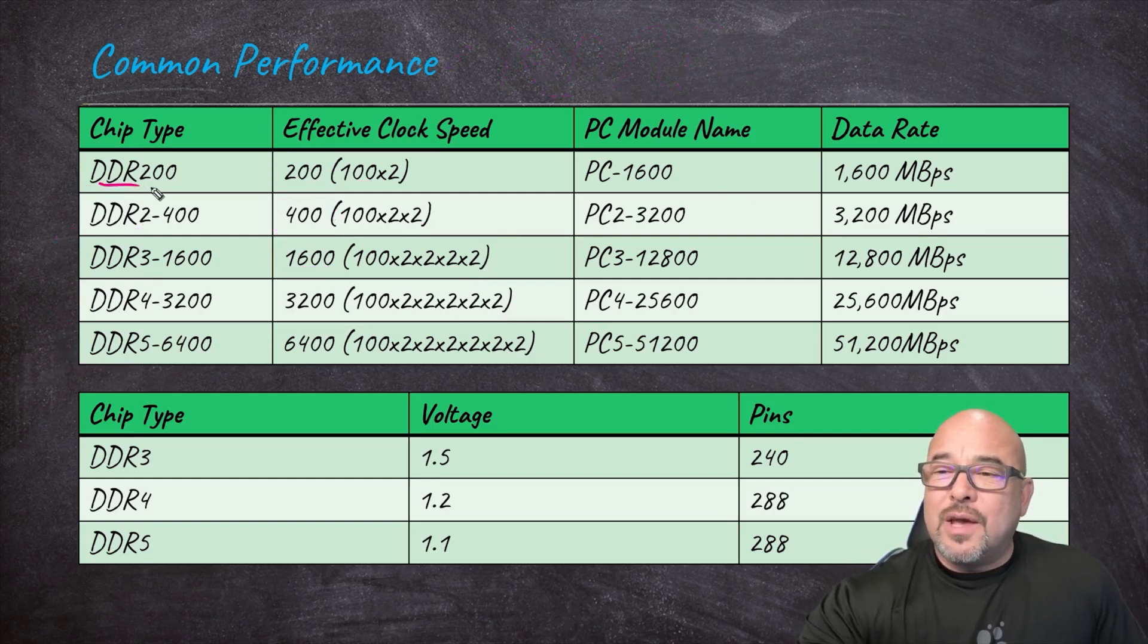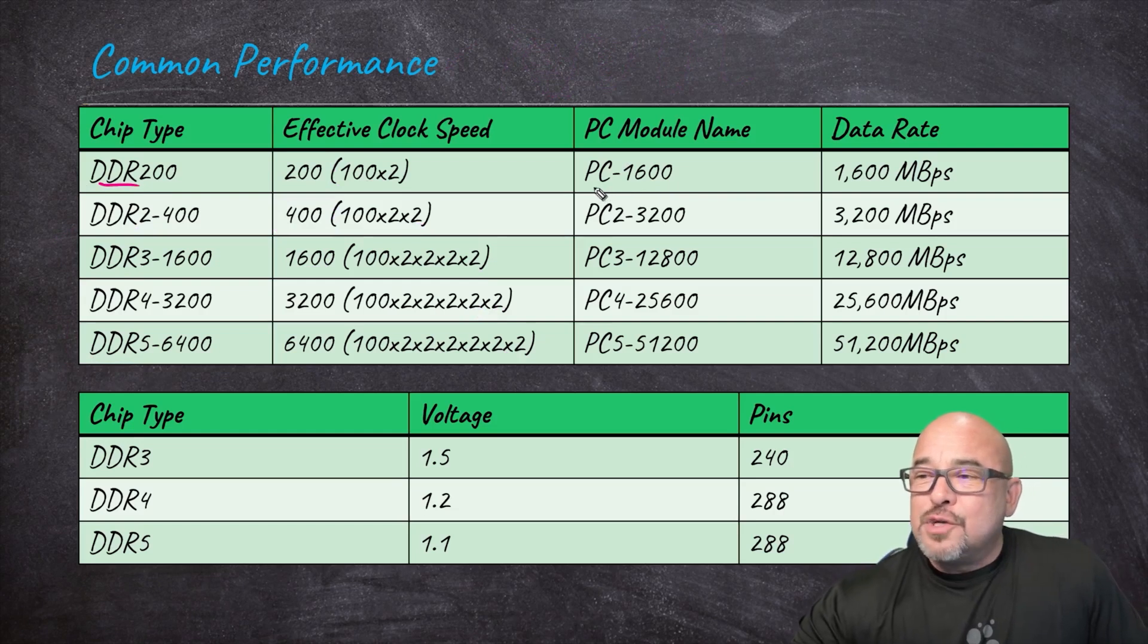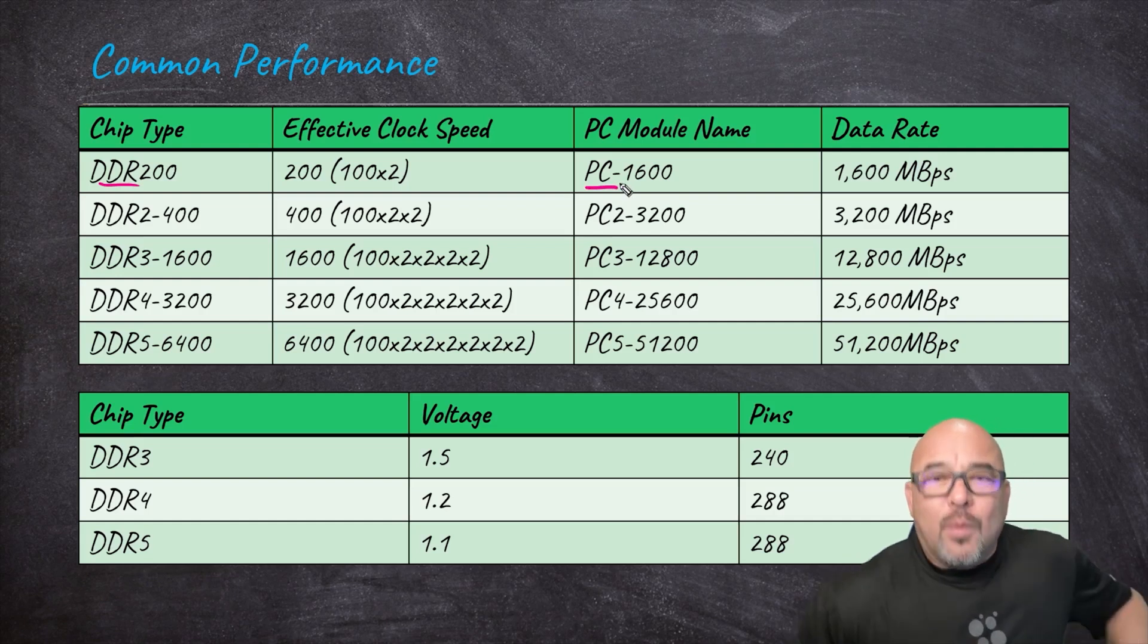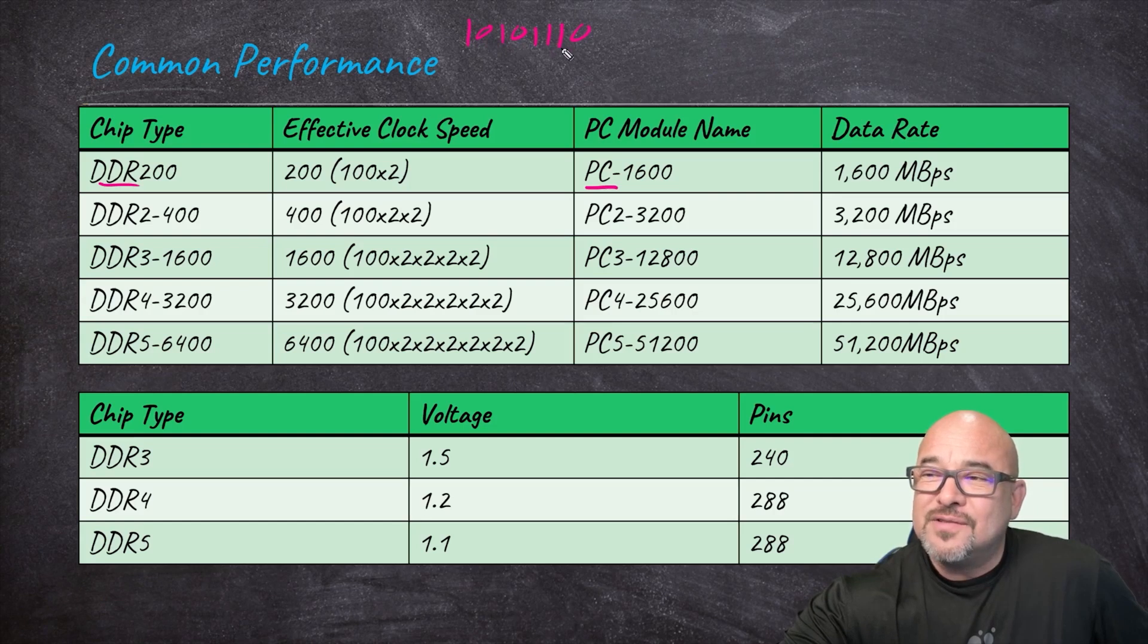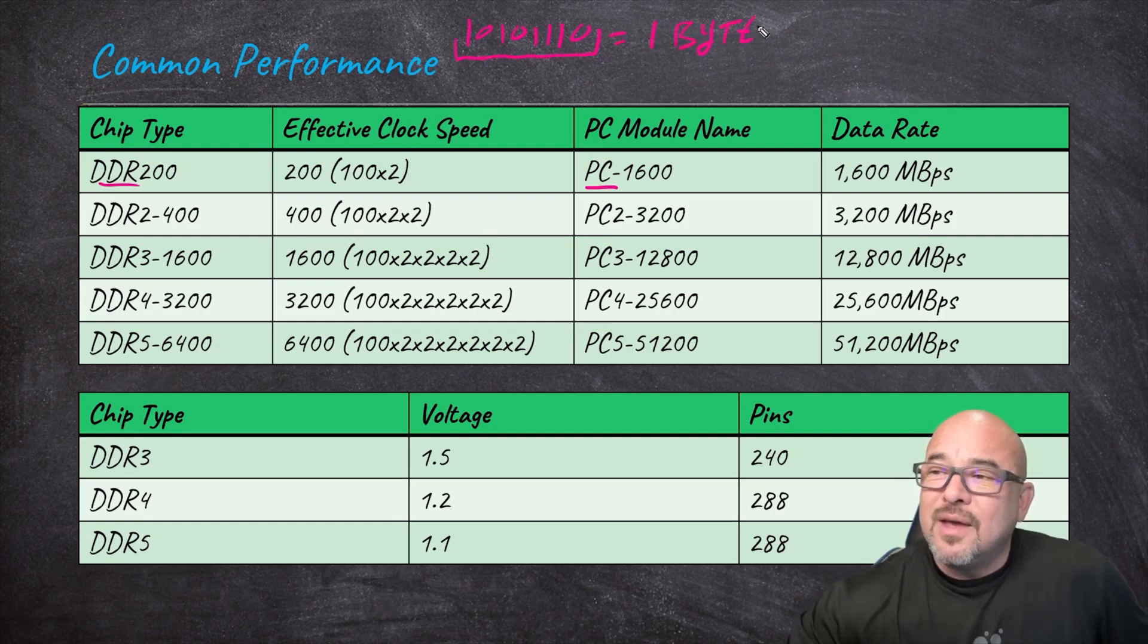Now let's also take a look further to the right here. So starting again with this one here, this module might be named, you'll see it named different ways, but this might be called PC-1600. What does that mean? Well we have to understand that in computing we work with bits, which are just like this: eight bits of data, one two three four five six seven eight. That might represent something in data. Now, all eight bits together equals one byte.